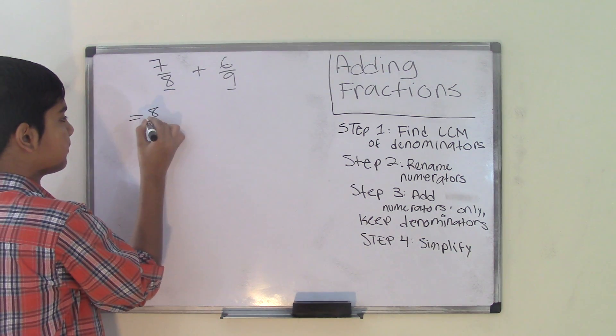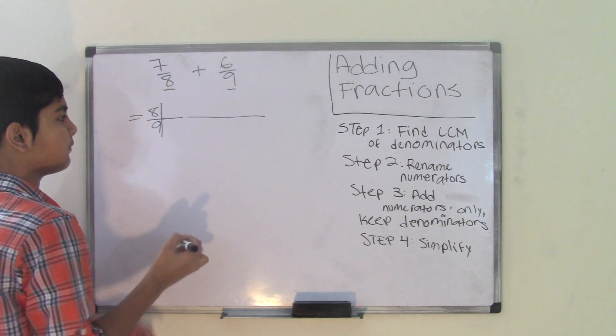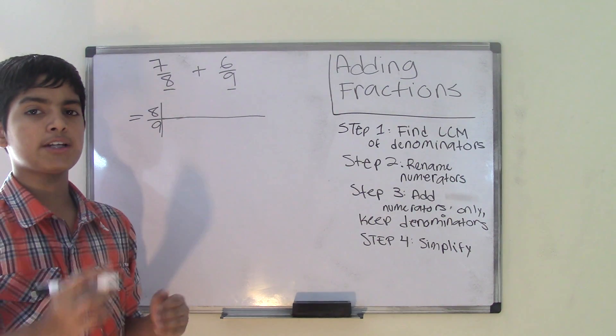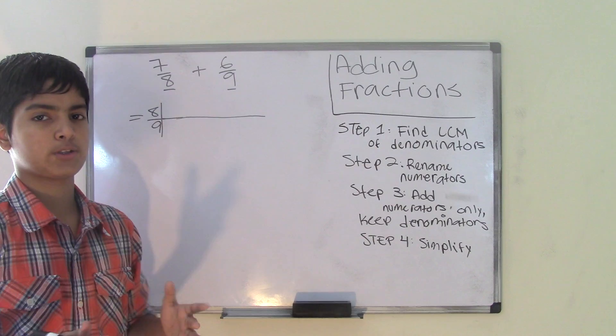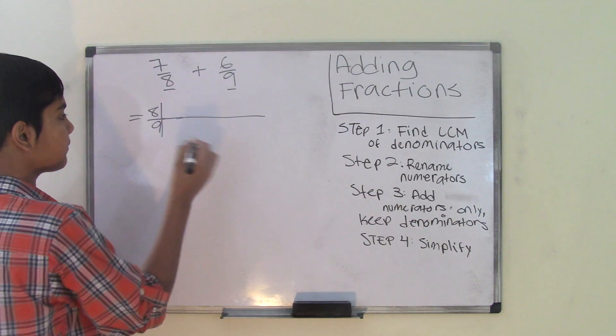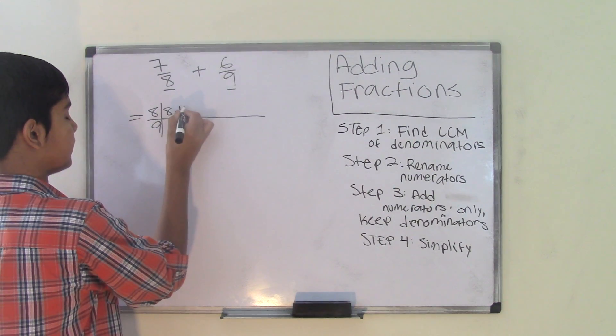Let's put the numbers 8 and 9. To find the LCM, we need to first list some multiples for each number. Whenever we find the first common multiple, that will be our least common multiple.